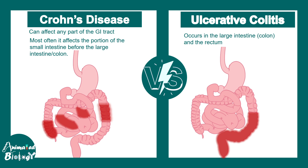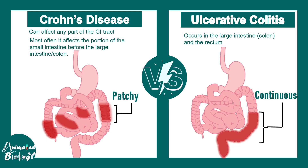The inflamed tissue in Crohn's disease shows a patchy appearance — there are inflamed tissues flanked by normal tissue, giving a salt-and-pepper appearance of inflamed and non-inflamed tissue. In the case of ulcerative colitis, there is continuity in terms of the inflamed tissue.